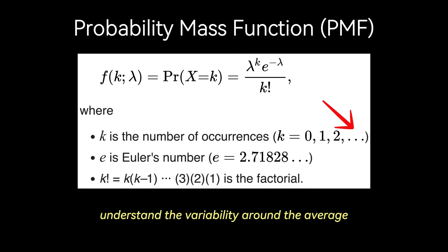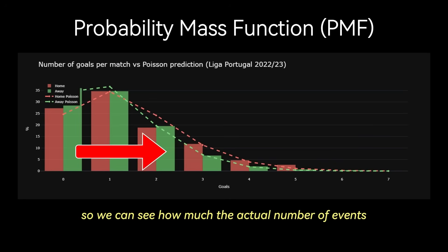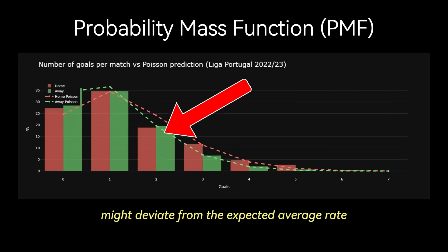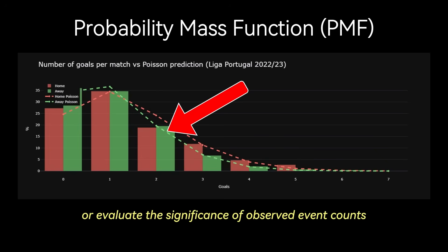Understand the variability around the average, so we can see how much the actual number of events might deviate from the expected average rate. As boring as it may sound, based on the probabilities, we can assess risks, plan resources, or evaluate the significance of observed event counts.